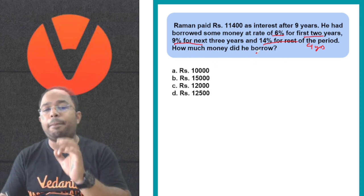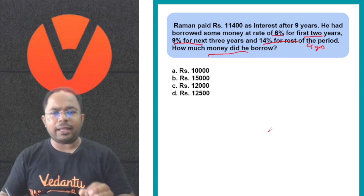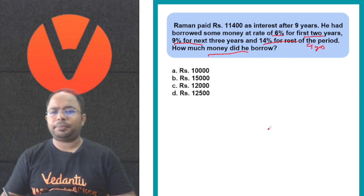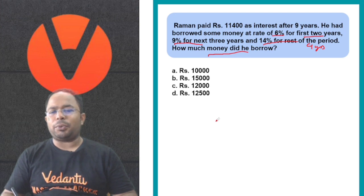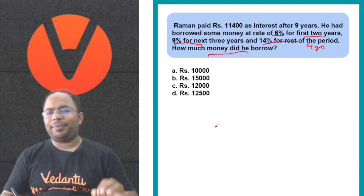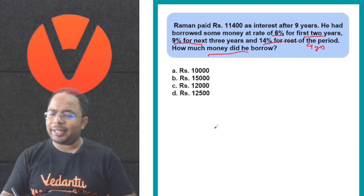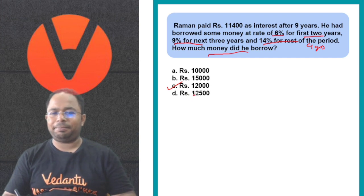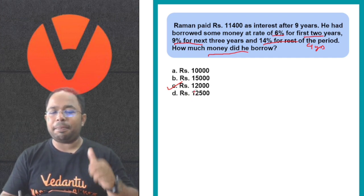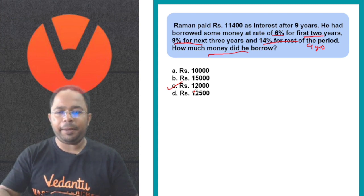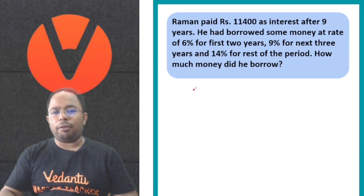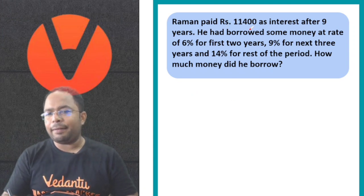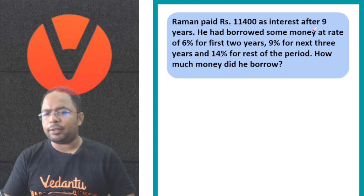How much money did he borrow? Let's see the answer. If you got option C, Rs. 12,000 — perfect. Rs. 12,000 is the perfect answer. Raman paid 11,400 as interest after 9 years. We don't know the principal.